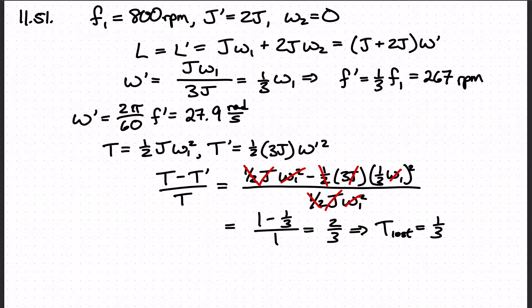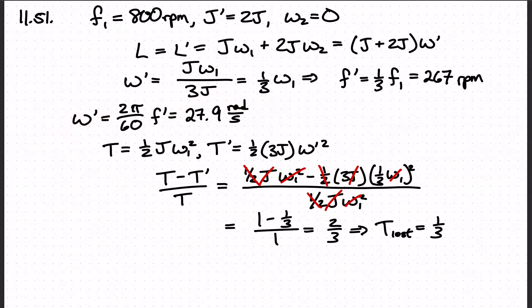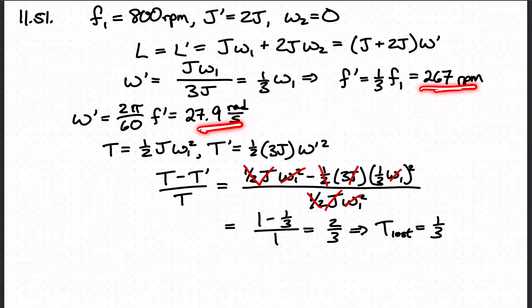Converting to radians per second, we apply the factor of 2π/60, and the angular velocity comes out to 27.8 radians per second. A useful rule of thumb is that 2π/60 is roughly one-tenth, so you can expect about a factor of one-tenth when going from RPM to radians per second.